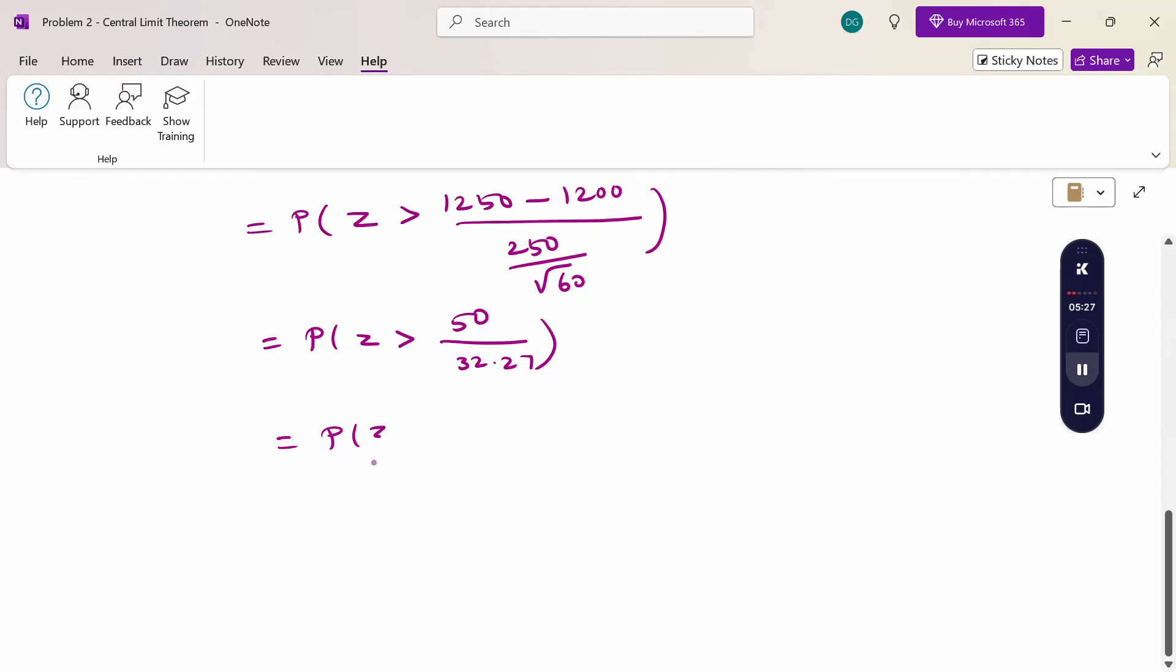This is probability of z greater than 1.55. Now this is a normal curve. In the normal curve, minus infinity to plus infinity. The negative side is 0.5, the right hand side is 0.5. Now to calculate from 1.55, from 1.55 up to infinity.